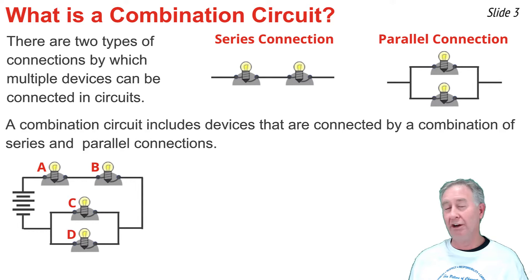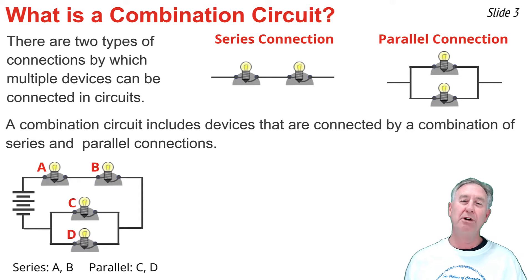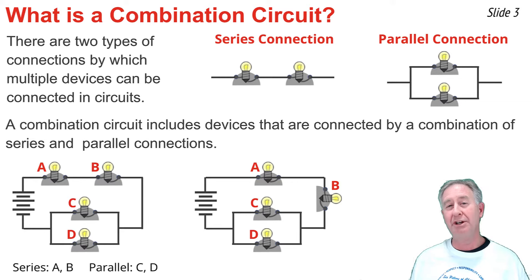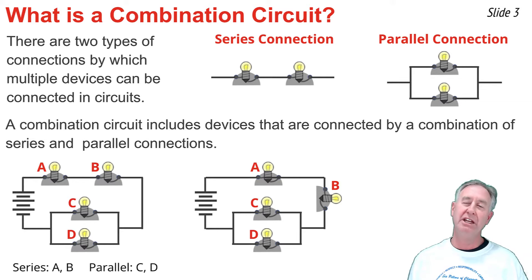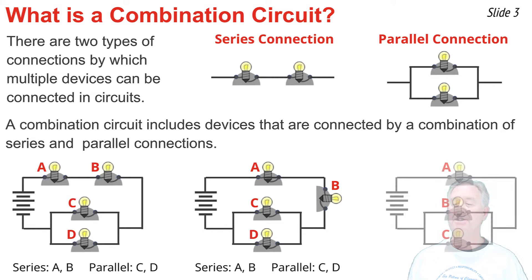In the first example, bulbs A and B are connected in series to one another, and bulbs C and D are connected in parallel. In the second example, it's the same arrangement — bulbs A and B in series, bulbs C and D in parallel in their own separate branches. In the last example, bulbs B and C are in parallel to each other, and bulb A lies outside the branch, in series with the parallel section.